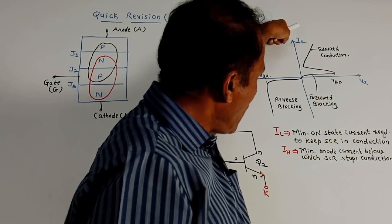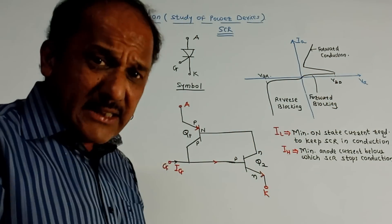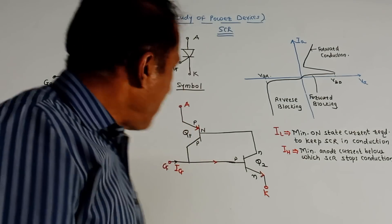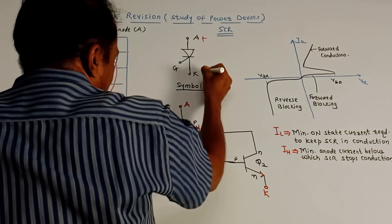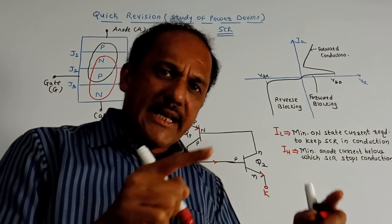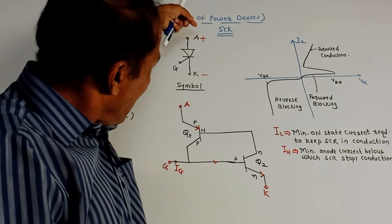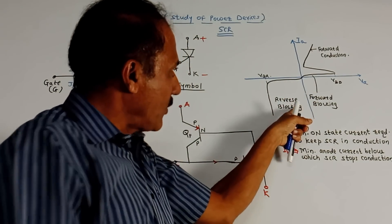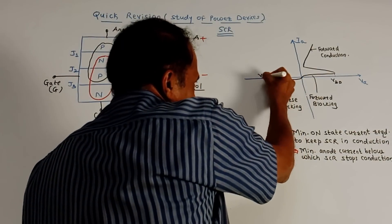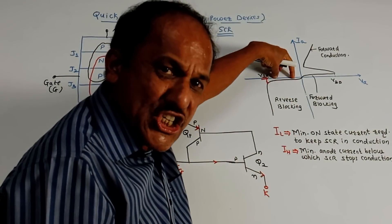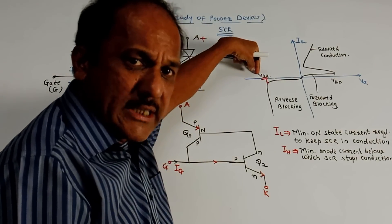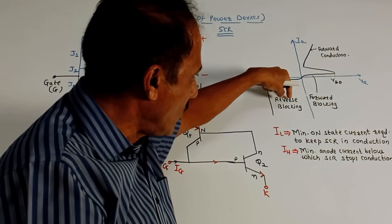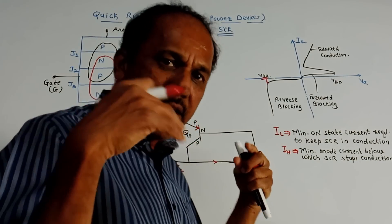Next are the IV characteristics — anode current versus anode voltage. In reverse blocking mode, you apply a negative connection to the anode and positive to the cathode. This gives a reverse blocking region: up to breakdown voltage VBR, there is reverse leakage current. After that particular breakdown voltage, breakdown of the device occurs, and this region is called the reverse blocking region where SCR is not in conduction mode.